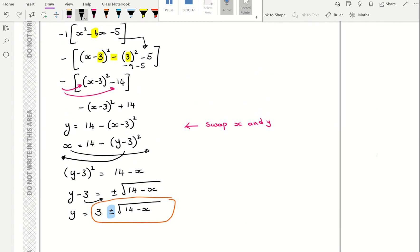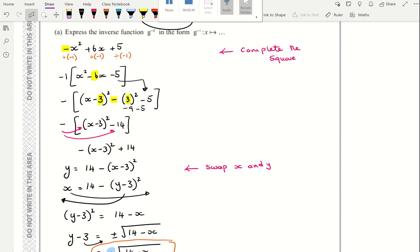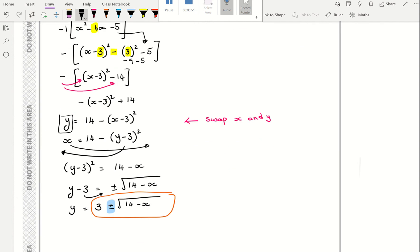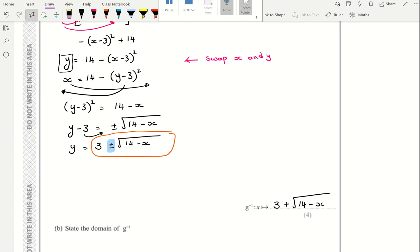This is basically how these type of questions go. You complete the square. You put it as an equation with y as the subject. You swap x and y around. You rearrange it to make y the subject again.